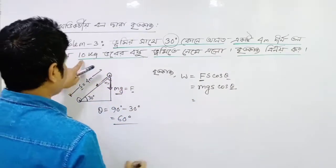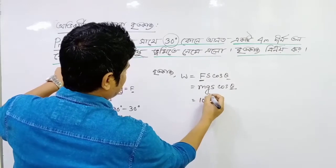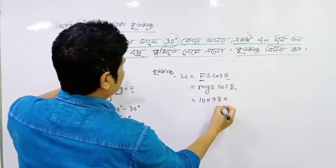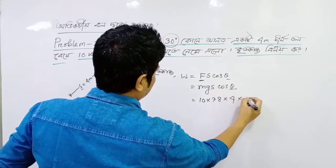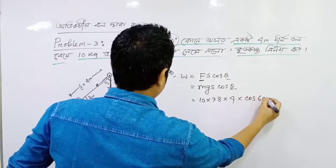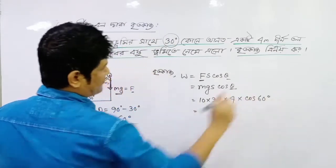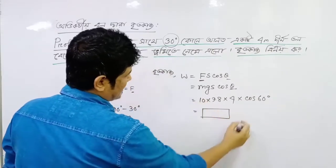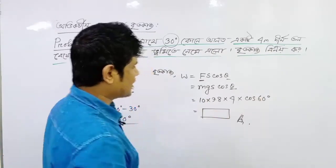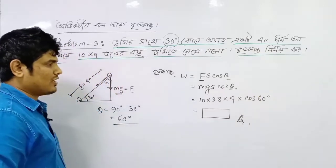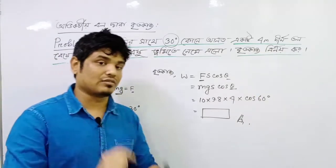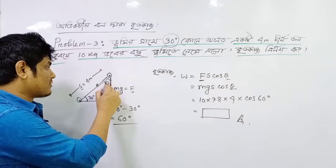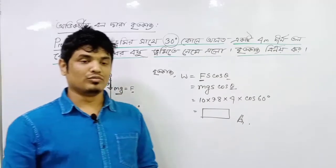So this is how much theta is. mR is 10, gR is 9.8, sR is 4 meters, and theta is 60 degrees. So the work done with these values is computed from the formula.